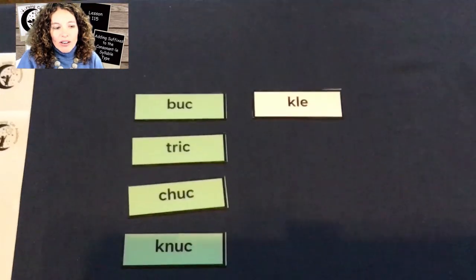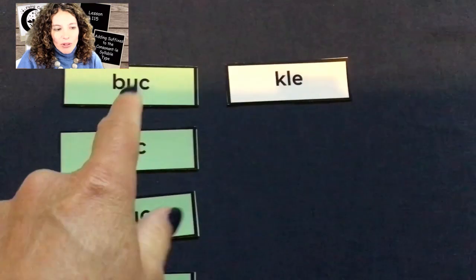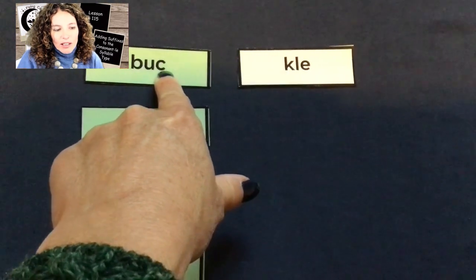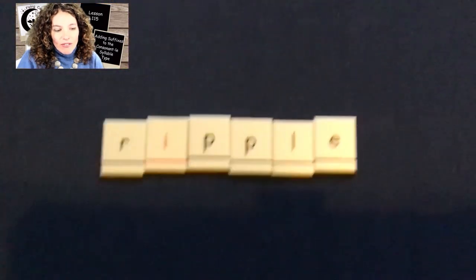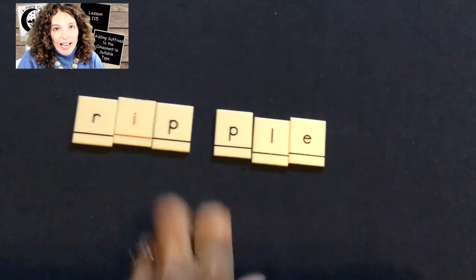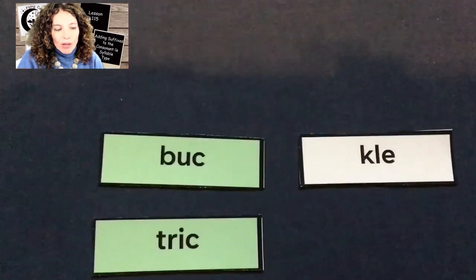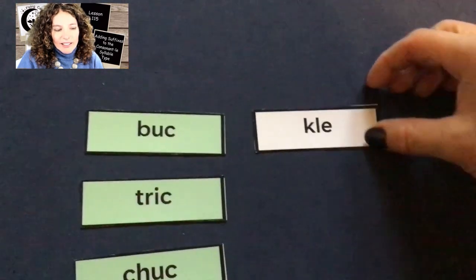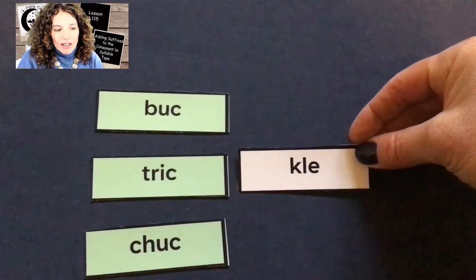Today we're going to do a syllable card drill and talk about what happens when we have the K sound at the end of the closed syllable. In this case we're going to use a C, so we'll have the CK combo. We've got B-U-C and then K-E-L. We do this because we don't like to double the K in English — we avoid doing that. We have to have the double sound, but when we're dealing with the K sound, the C steps in to make that K sound. So buckle would be B-U-C-K-L-E. If your teacher has this one on the table, you can just pause me here and do it yourself.